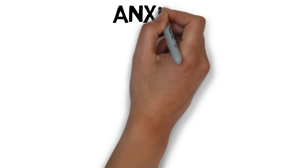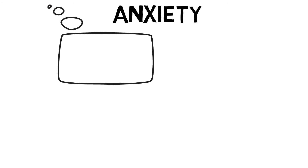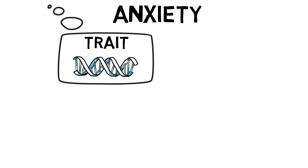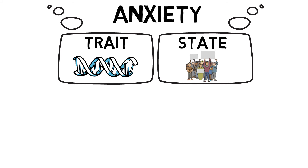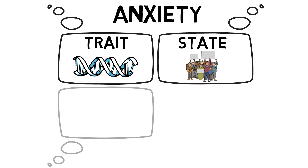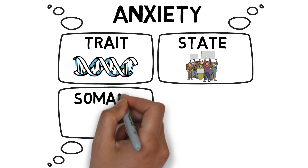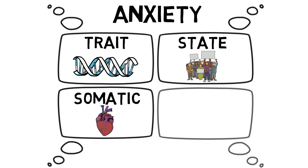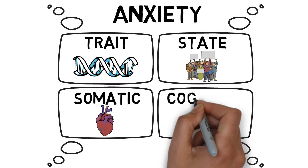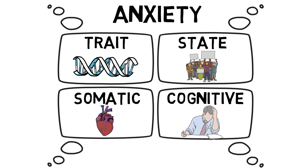One area that can affect arousal levels is anxiety. Trait anxiety, which is an inbuilt part of your personality, refers to a tendency to react to competitive situations with tension and apprehension. State anxiety is an emotional response to a specific situation, and will commonly be temporary or change as the day goes on. Symptoms of anxiety can be both physical or somatic, such as increased adrenaline, increased heart rate and breathing rate, increased body temperature, or nausea. Symptoms can also be psychological or cognitive, such as apprehension, increased focus, worry, or negative thoughts.